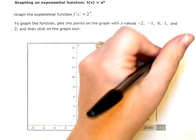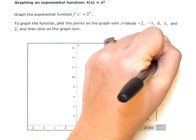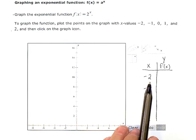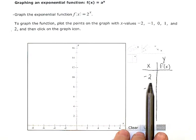My function values, my f of x values on my graph, are going to be the y coordinates. So I just need to evaluate the function for each of these x values, find the y value, and then plot my points.